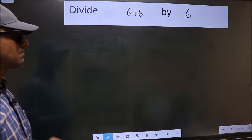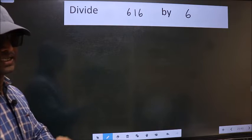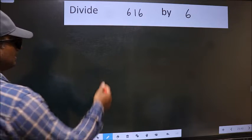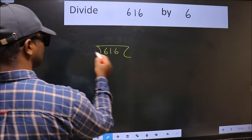Divide 616 by 6. To do this division, we should frame it in this way: 616 here and 6 here.